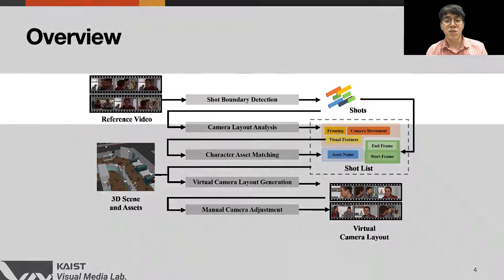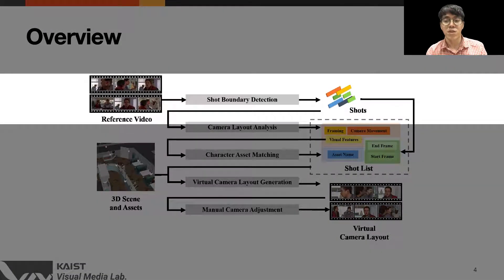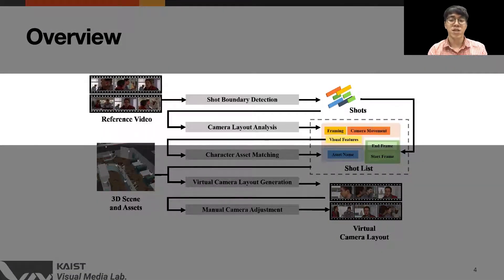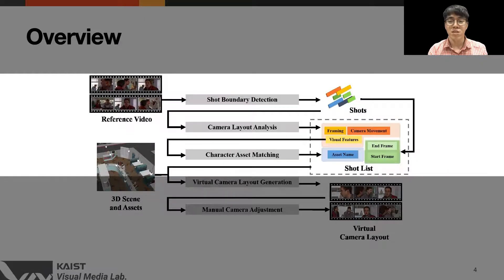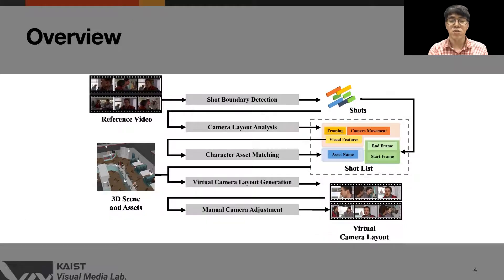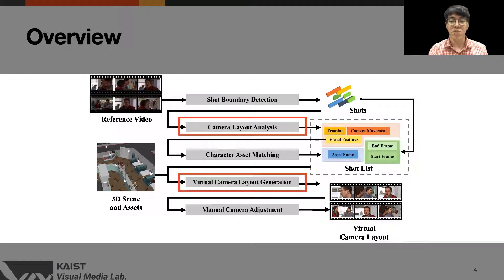Here is our overview. Given an input reference video, we detect the shot boundaries. Each shot is then analyzed for the camera layout within a predefined set of grammar. The user manually matches the subject and the 3D actors, and this information is stored in the form of a shot list. We calculate the virtual camera position in the toric space and further optimize to satisfy the visual constraints of the reference shot. Finally, the camera motion is generated based on the information in the shot list. In this work, we focus on camera layout analysis and virtual camera layout generation.